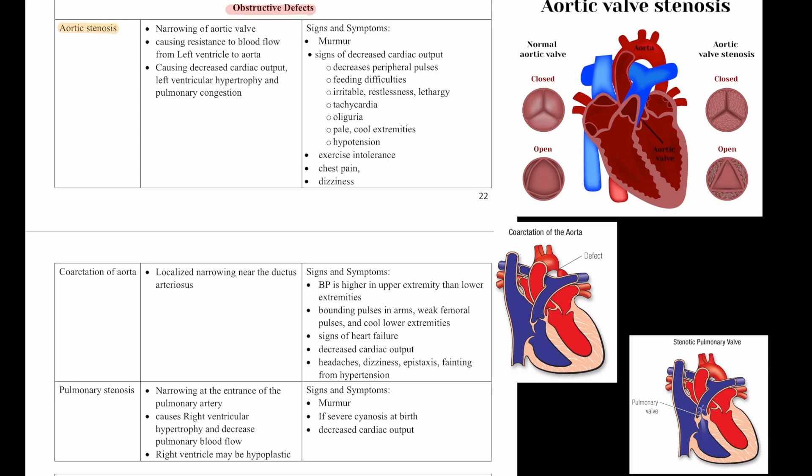Then we have coarctation of the aorta. This is a localized narrowing near the ductus arteriosus. A key sign is that blood pressure is higher in the upper extremities than the lower. Finding the things that are specific to each defect is really important because that's what they'll give you in a question. You'll see bounding pulses in the arms but weak femoral pulses and cool lower extremities.